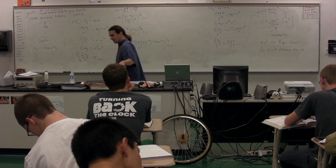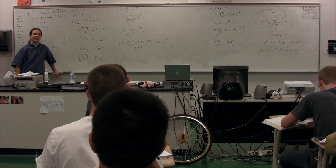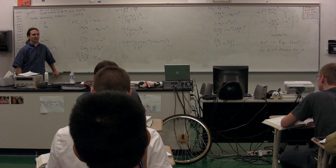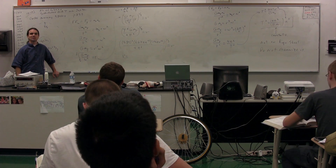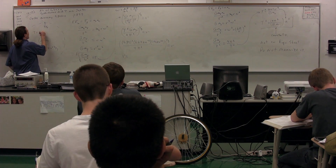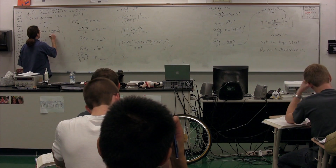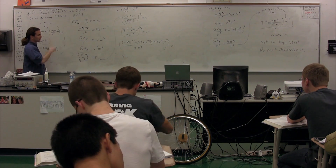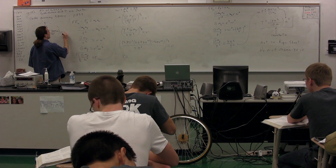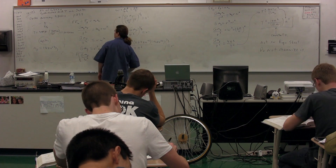Does the period in hours matter? Yes — because big G is in newtons times meters squared divided by kilograms squared, and a newton is kilograms times meters per second squared. So we absolutely need the 9.84 hours converted to seconds. Converting: 9.84 hours times 3600 seconds per hour gives a period of 35,424 seconds.